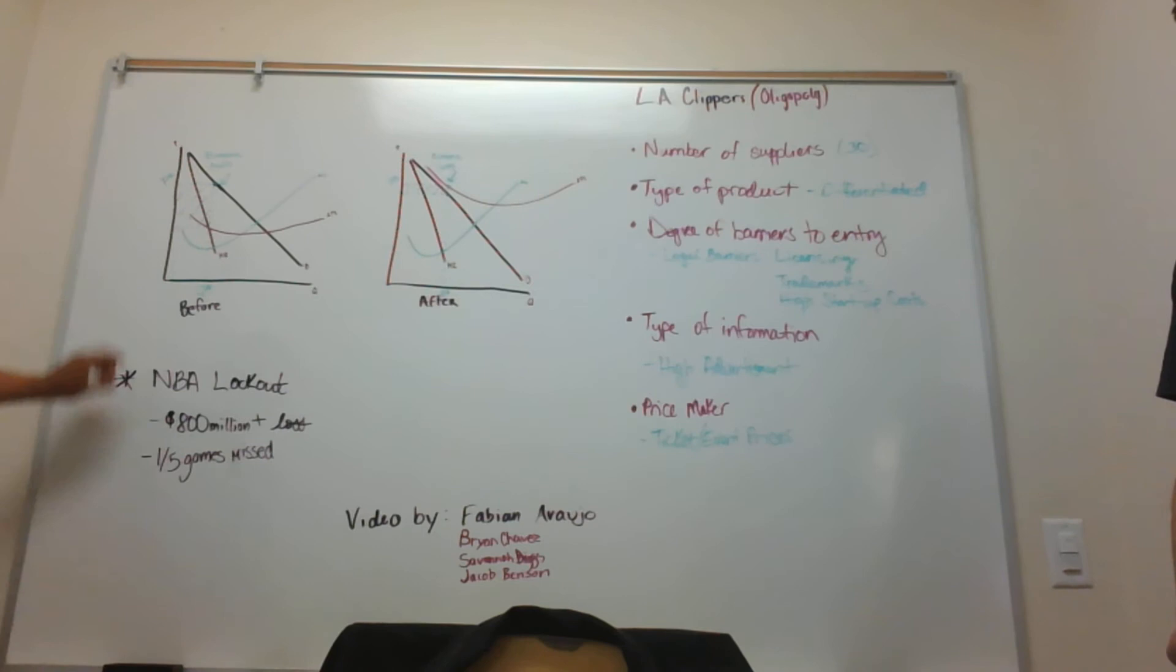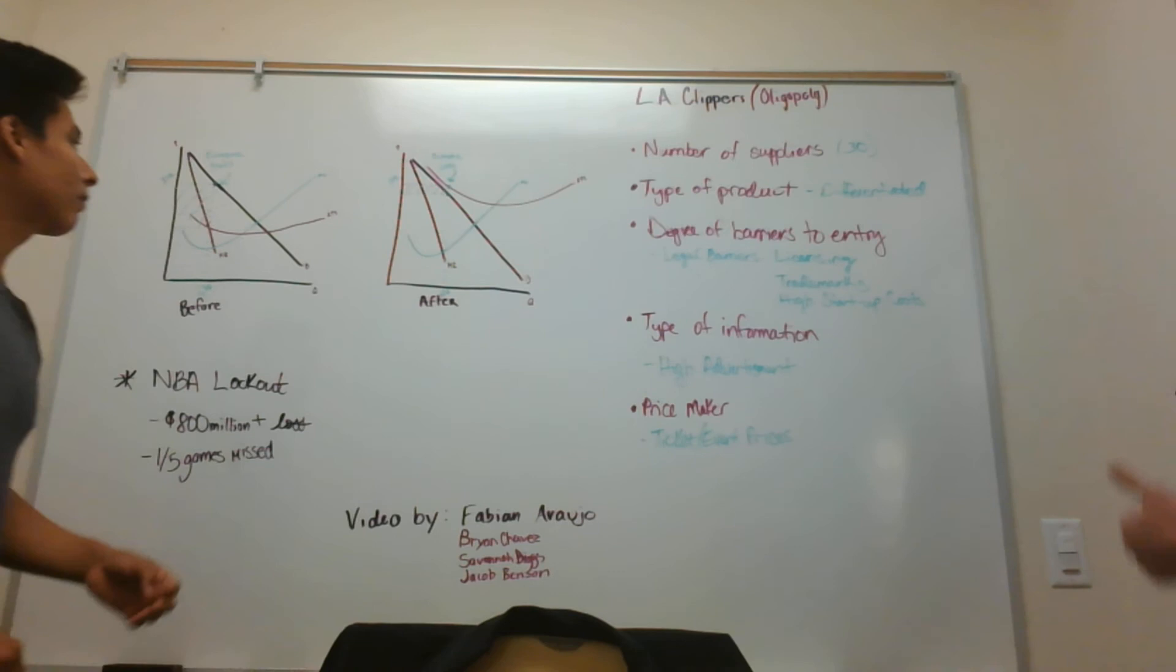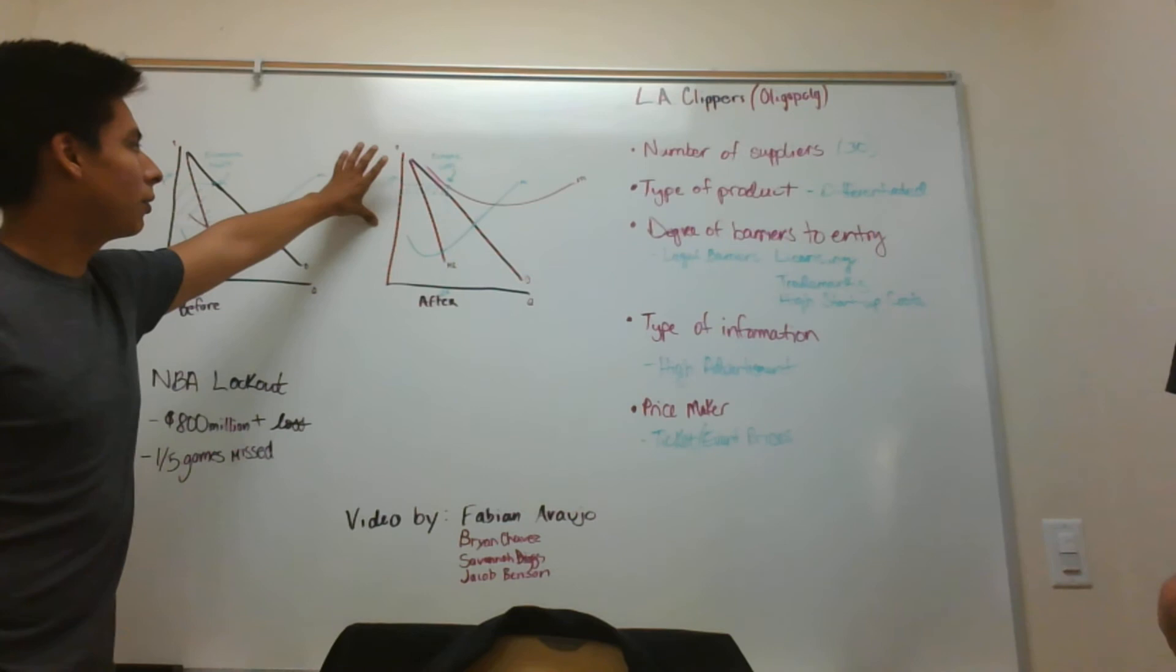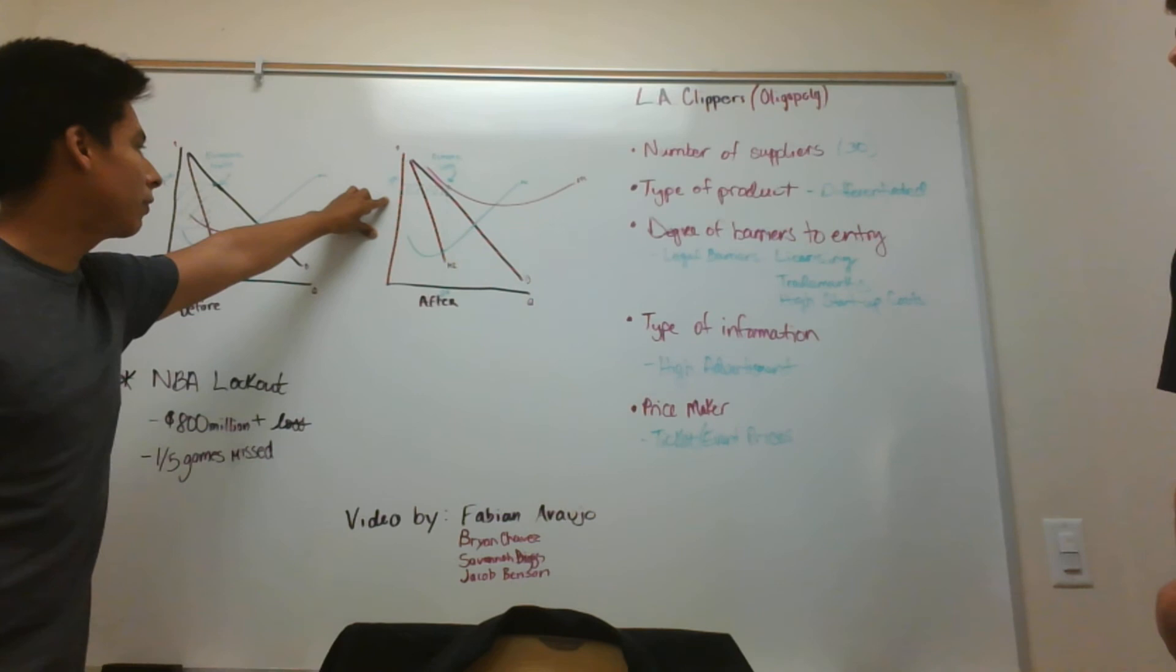After the NBA lockout occurred, we had an $800 million plus loss due to missing a fifth of the games. We lost total revenue due to ticket sales and our average total costs actually stayed the same due to fixed costs with total salaries for the players and everyone involved, but our demand dropped and total revenue dropped due to losing a fifth of the games. So now we're working at an economic loss for the LA Clippers.